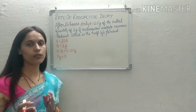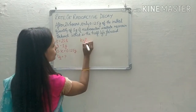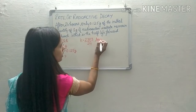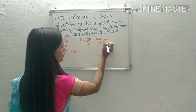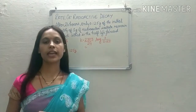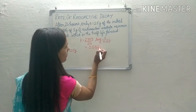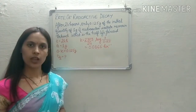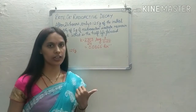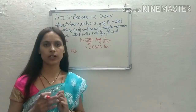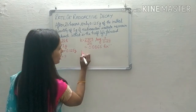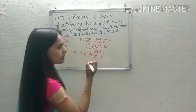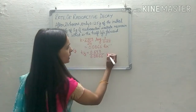Since it is a radioactive isotope, it follows first order kinetics. K = 2.303/t × log(a/(a−x)) = 2.303/24 × log(1/0.125). On solving, K comes out to be 0.0866 hr⁻¹. The unit hr⁻¹ also confirms it is a first order reaction. To find t-half, we apply t-half = 0.693/K = 0.693/0.0866.